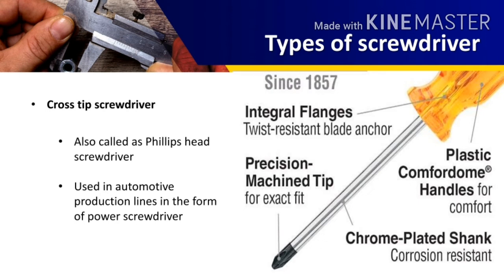Next is the cross tip screwdriver, also known as the Phillips screwdriver, named after Henry Phillips. In the cross tip screwdriver, the tip is tapered down to a 53 degree angle, and at the very end the angle of the tip is kept at about 110 degrees. The screw also has the same angle inside the notch. While using the cross tip screwdriver, the axis of the screwdriver and the axis of the screw must be in the same straight line; otherwise it will tend to slip, and due to the slip the notch of the screw head will be destroyed, making it difficult to remove the screw.